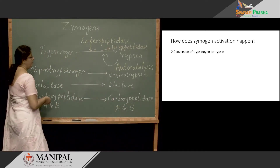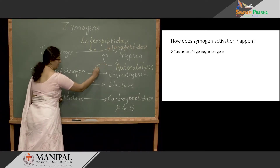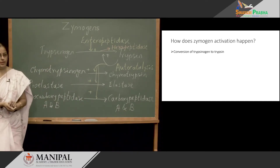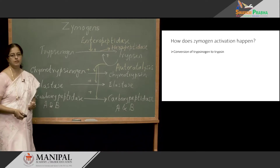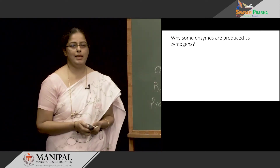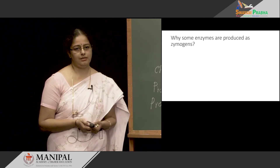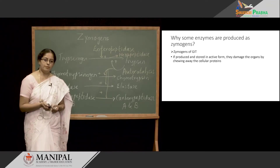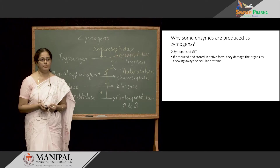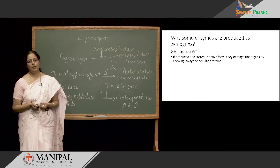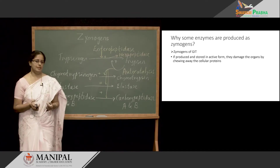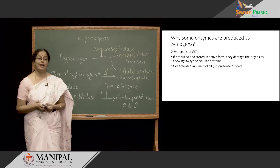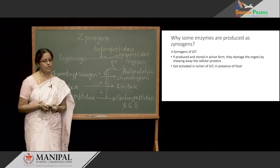Trypsin is responsible for converting all these Zymogens to their active form. Now, let us consider why some enzymes are produced in Zymogen forms. Consider the Zymogens of the GI tract — if these Zymogens are produced and stored in active form, they can damage the organ by chewing away the cellular proteins. So it is only wise to store them in inactive form, and they get activated in the lumen of the intestine in the presence of food, thereby facilitating action on the food.